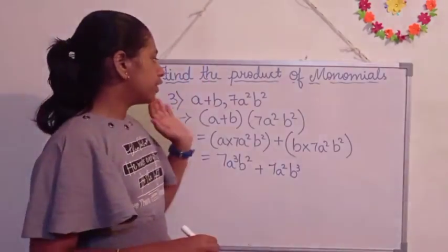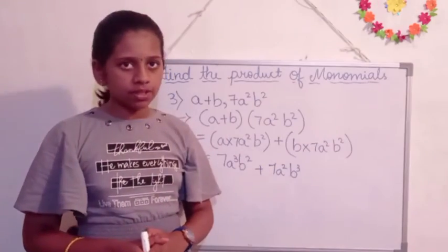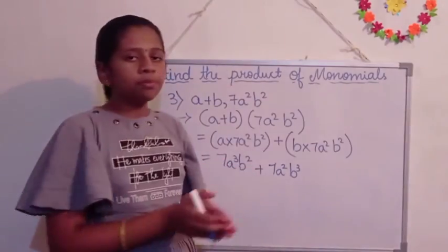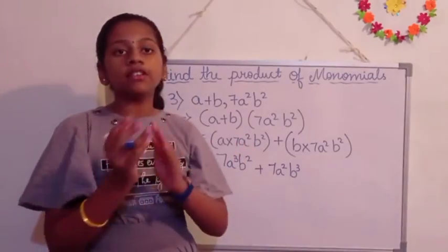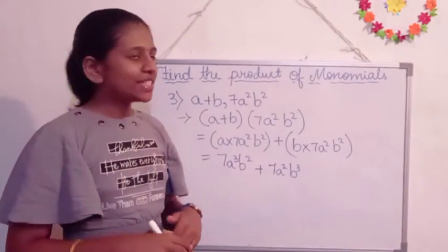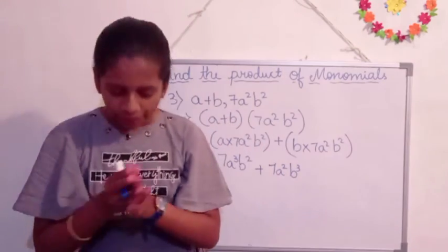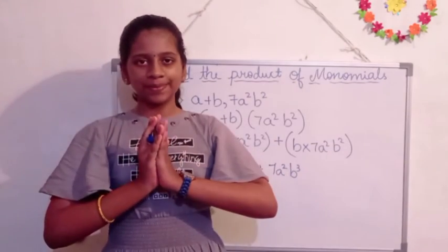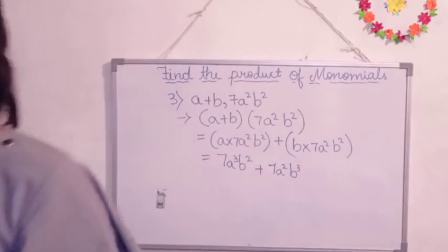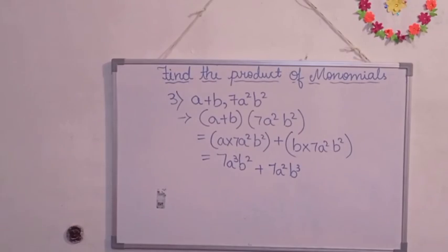So friends, this is the product of A plus B and 7A square B square, that is 7A cube B square plus 7A square B cube. So friends, this was all about how to find the product of monomials. Friends, please like my video and share my video, thank you.